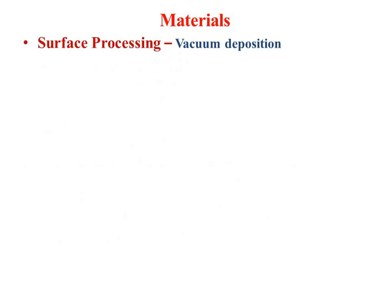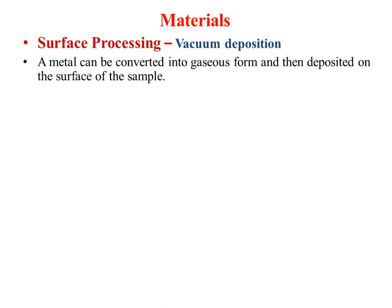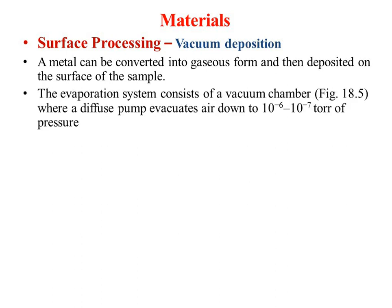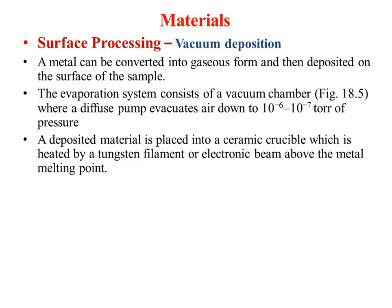The second method is vacuum deposition. There is a chamber maintained under vacuum in which a film is deposited. Metal can be converted into gaseous form and then deposited on the surface of the sample. The evaporation system consists of a vacuum chamber where a diffuse pump evacuates the air down to a pressure of 10⁻⁶ to 10⁻⁷ torr, and then the material is deposited on the sample.